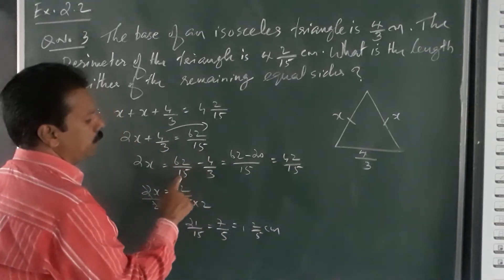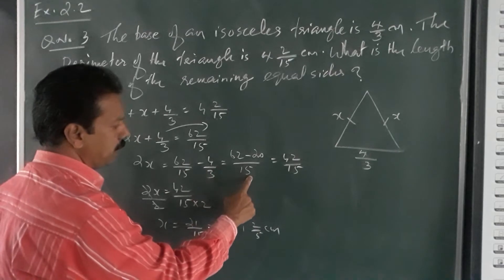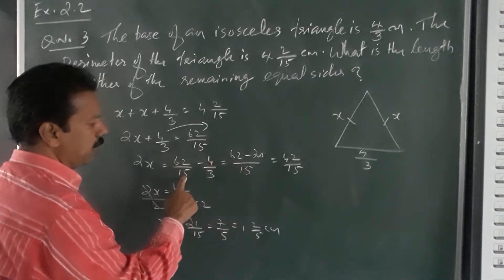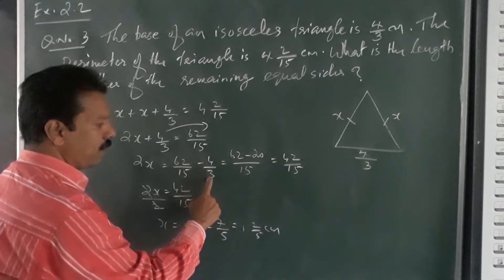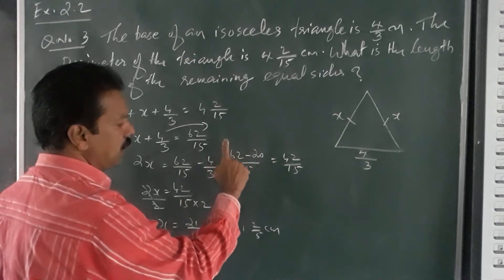Common denominator of 15 and 3 is 15. 1 into 62 is 62. 15 divided by 3 is 5, 5 into 4 is 20. 62 minus 20 is 42 by 15.